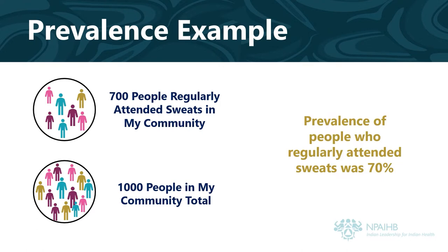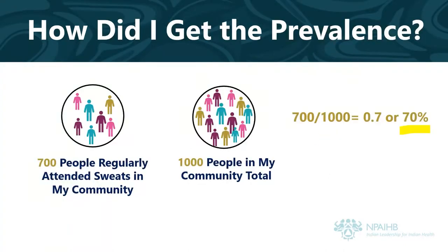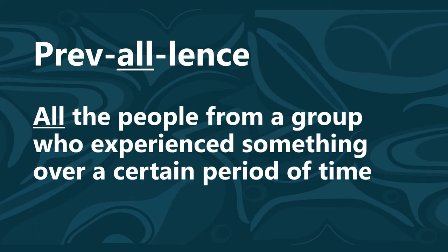In 2018, my community had 1,000 members. That means that the prevalence of people from my community who regularly attended ceremonial sweats in 2018 was 70%. I divided 700 regular attendees by 1,000 community members, which gives me 0.7 or 70%. An easy way to remember prevalence is to think: prevalence.